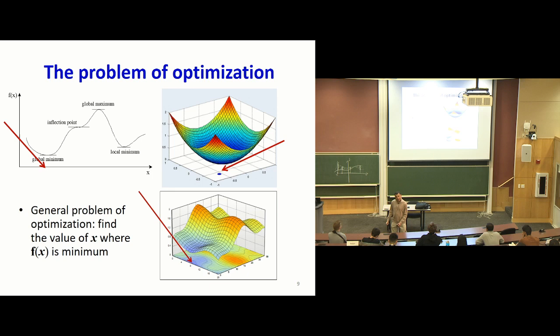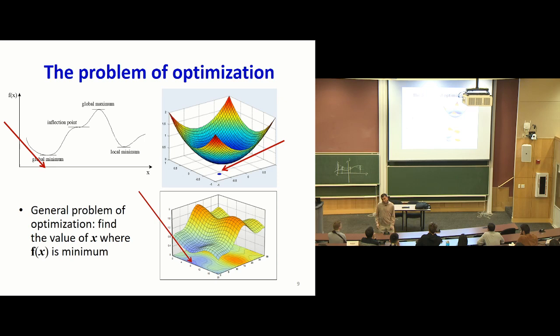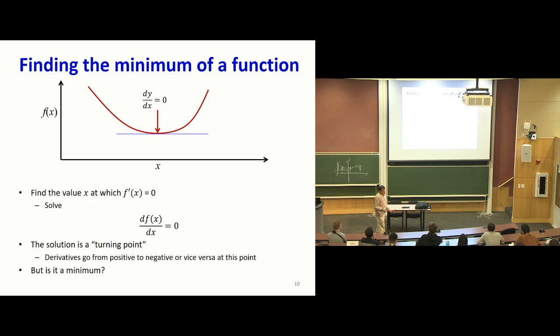So here's where we stopped in the last class. A quick crash course on this entire business of optimizing functions — finding a location where the function is either a minimum or a maximum. You have some function of a variable x, and our objective is to find the location, the value of x, where the function is minimum. The x could be a scalar; it could be a vector. So if it's a vector, you're going to have a function like the figures to the right, and there's a specific value of x where the function is a minimum.